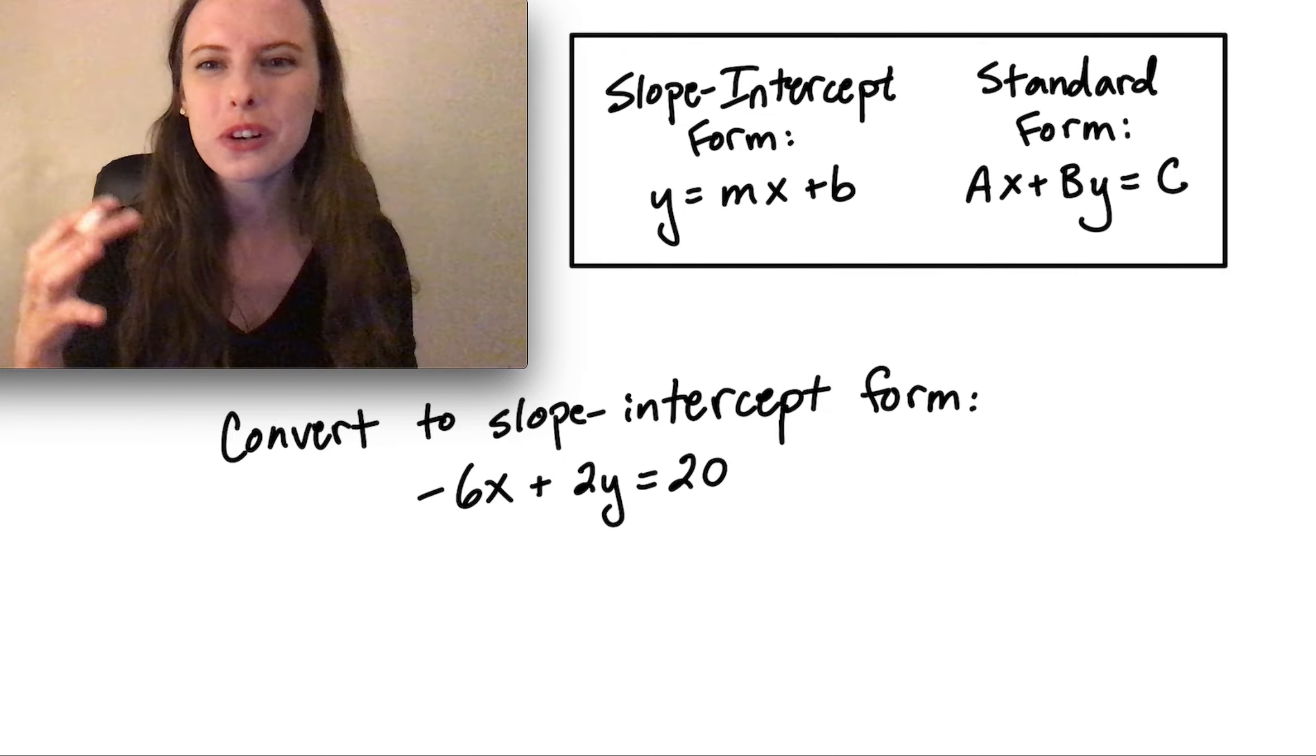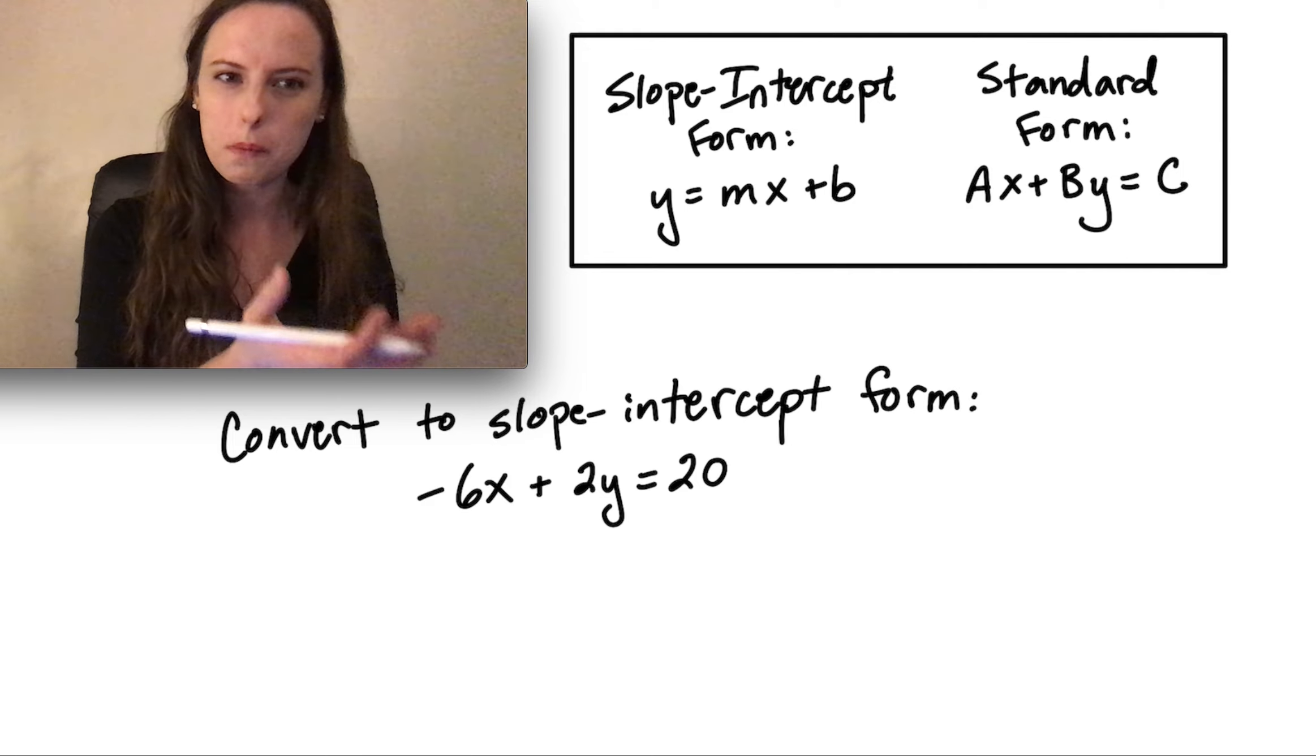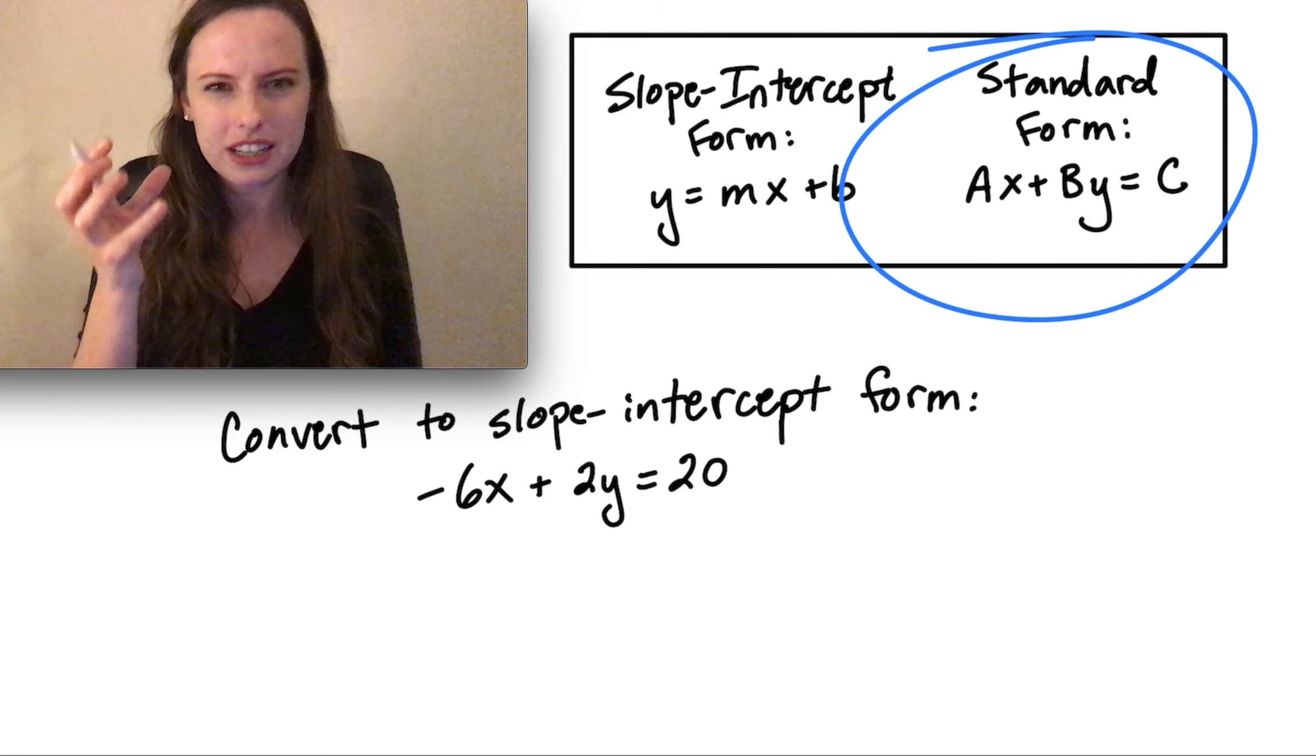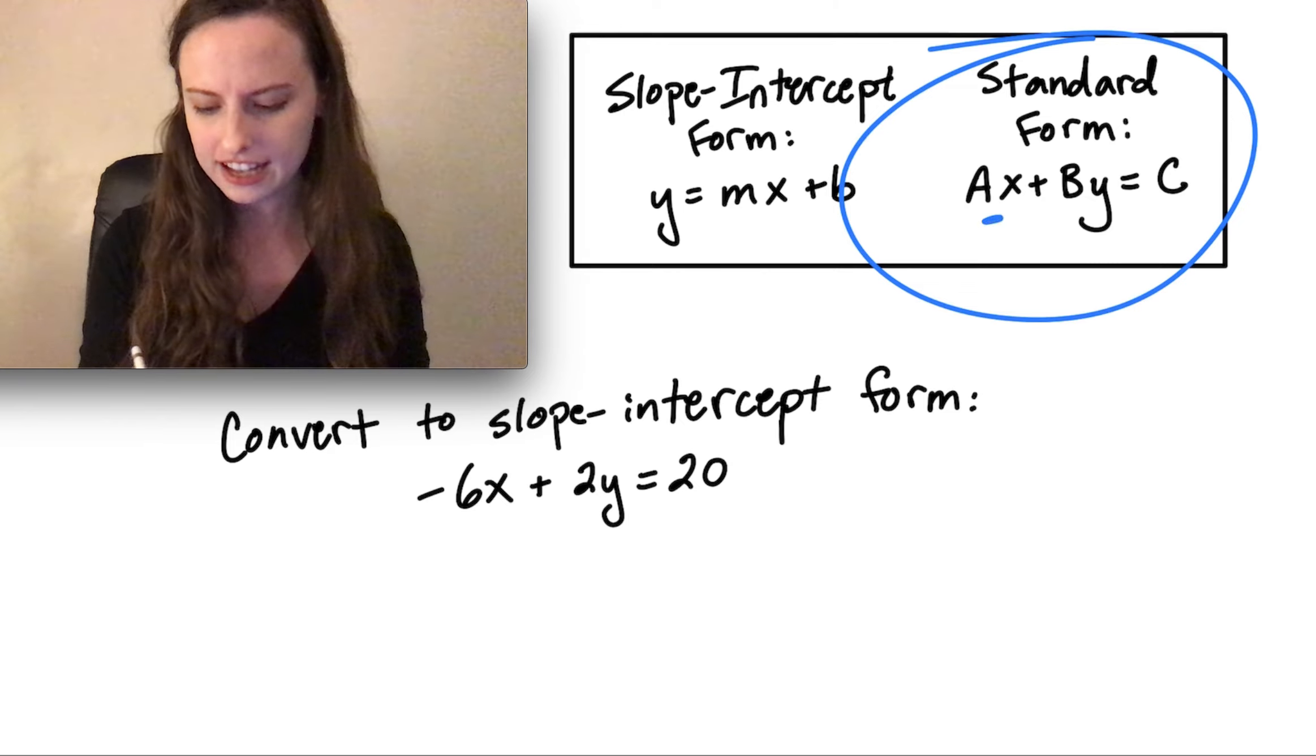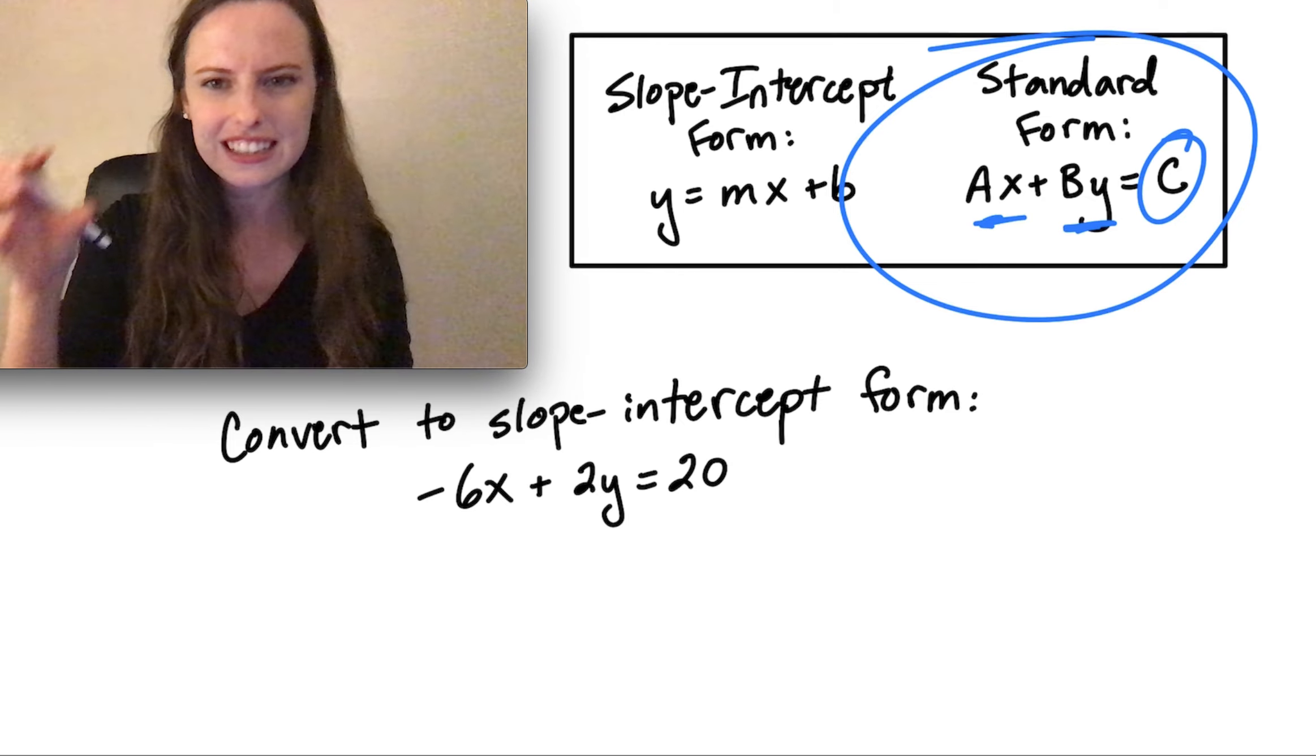In this video, we're going to be learning how to convert from standard form into slope-intercept form. Standard form is a form where all of your variables are on the same side of the equal sign. We've got the x and the y on one side, and then that constant c on the other side of the equals.